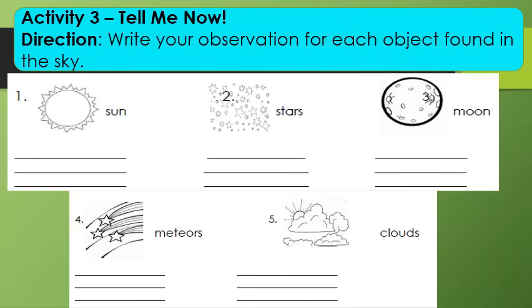Activity 3. Tell me now. Write your observation for each object found in the sky. Number 1. Sun. Number 2. Stars. Number 3. Moon. Number 4. Meteors. And number 5. Clouds. Write your observation for each object found in the sky.